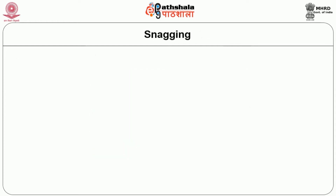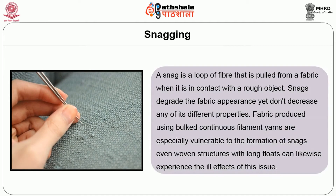Next is snagging. A snag is a loop of fiber that is pulled from a fabric when it comes into contact with a rough object. Snags degrade the fabric appearance but do not decrease any of its other properties. Fabrics produced from bulked continuous filament yarns are especially vulnerable to the formation of snags. Even woven structures with long floats can likewise experience problems from snagging.